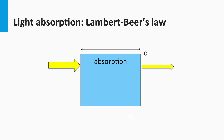At the moment we make some simplifications. First, we neglect the reflection or potential scattering at the interfaces. Secondly, we assume the light is monochromatic, which means that all photons have the same energy or wavelength. The absorption of a medium can be defined in terms of an absorption coefficient alpha. The dimension of the absorption coefficient is 1 over the length, and the typical unit used is 1 over cm.